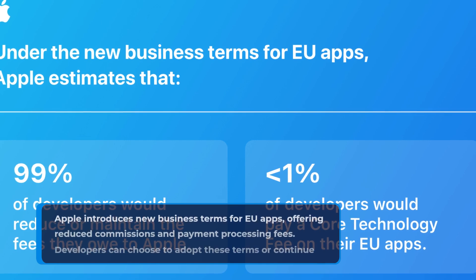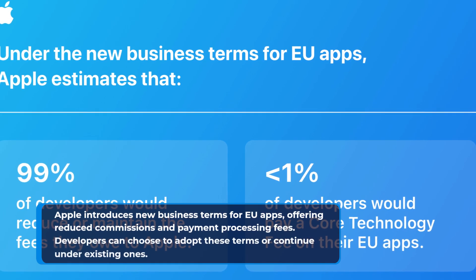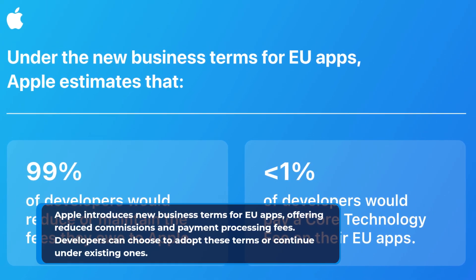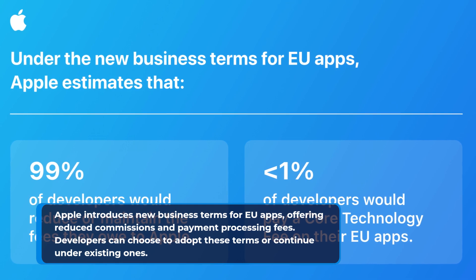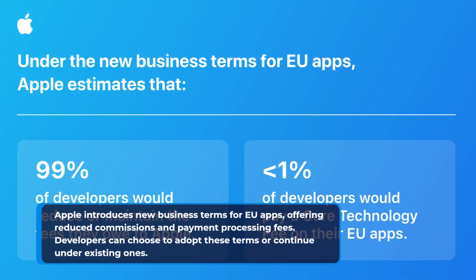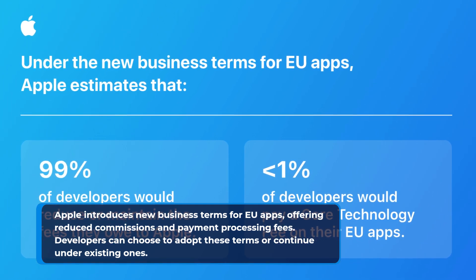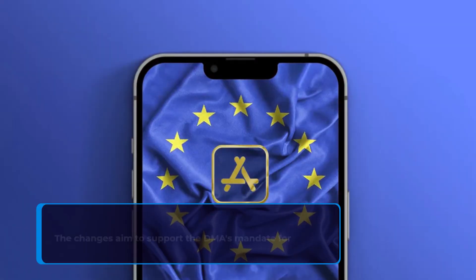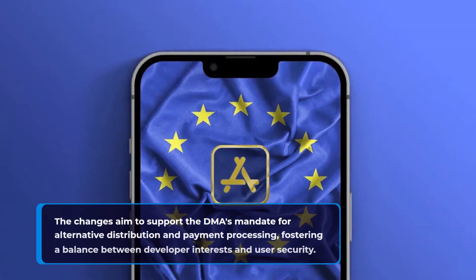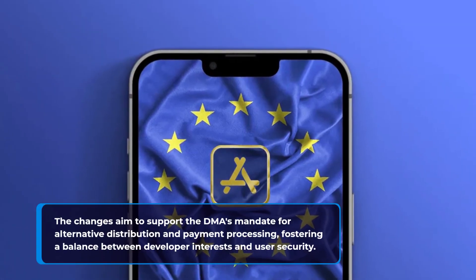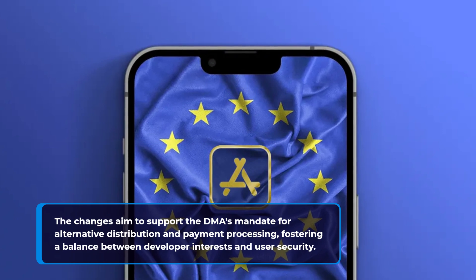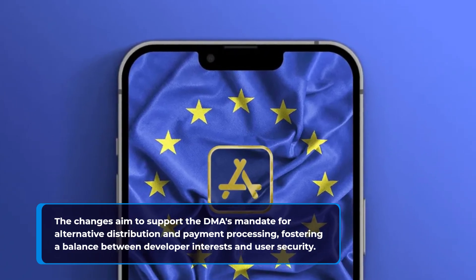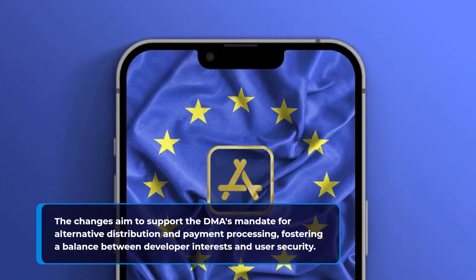Apple introduces new business terms for EU apps, offering reduced commissions and payment processing fees. Developers can choose to adopt these terms or continue under existing ones. The changes aim to support the DMA's mandate for alternative distribution and payment processing, fostering a balance between developer interests and user security.